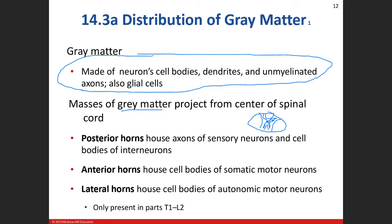When talking about areas of gray matter in that H-like pattern, we have three places — horns — where we name the gray matter. The posterior horn is going to be pretty much sensory neurons and the cell bodies of our interneurons. Most sensory neurons come in from the periphery, synapse to an interneuron, or ascend up to the brainstem. The anterior horns house the cell bodies of the somatic motor neuron, which innervates skeletal muscle — involuntary control via the somatic nervous system.